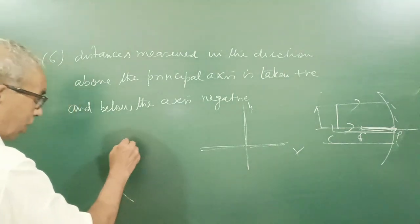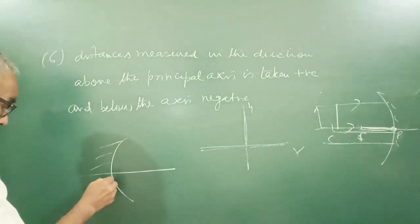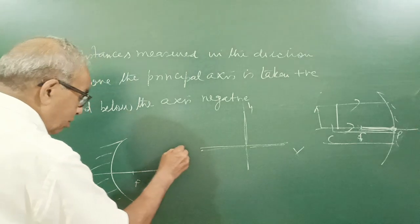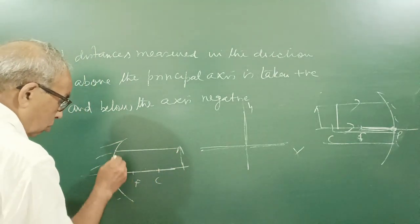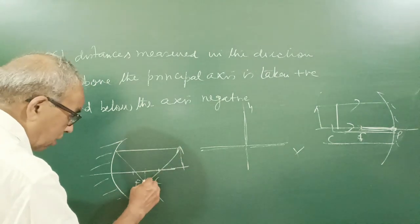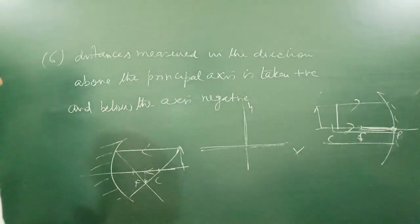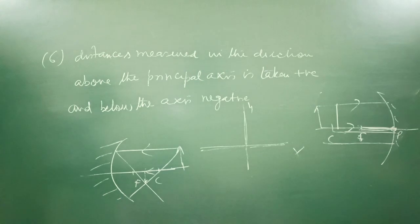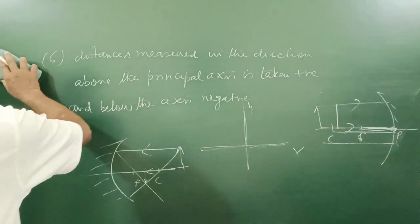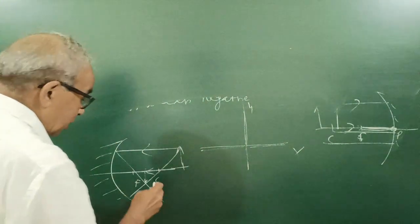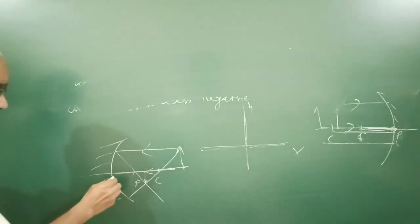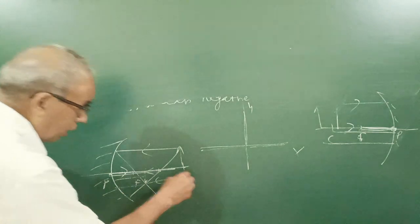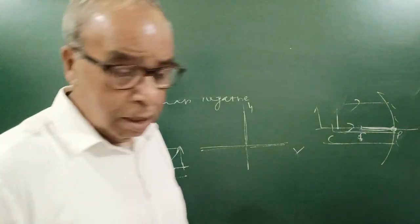Someone may keep the mirror flipped this way then C here F here, object here light coming this way it will pass through focus and this through C image here. Light coming this way, coming way here against incidence range.